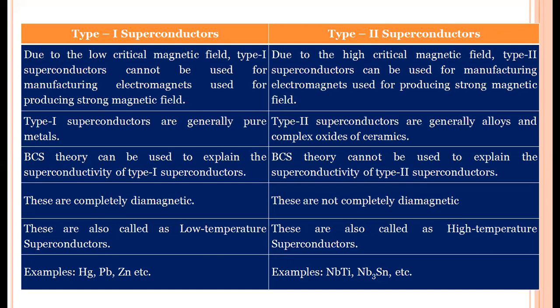Type 2 superconductors have a high critical magnetic field, so they are used for manufacturing strong electromagnets. Type 1 superconductors are generally pure metals, whereas type 2 superconductors are alloys and also complex oxides of ceramics. The BCS theory — Bardeen, Cooper, and Schrieffer theory — explains superconductivity in type 1 superconductors, but BCS theory fails to explain superconductivity in type 2 superconductors. Type 1 superconductors show complete diamagnetism due to the Meissner effect, but type 2 superconductors are not completely diamagnetic.